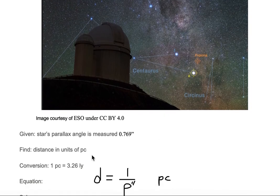We are given a star's parallax angle is measured to 0.769 arc seconds. We would like to find the distance in units of parsecs, and we're given a conversion should we need it. One parsec is equal to 3.26 light years.